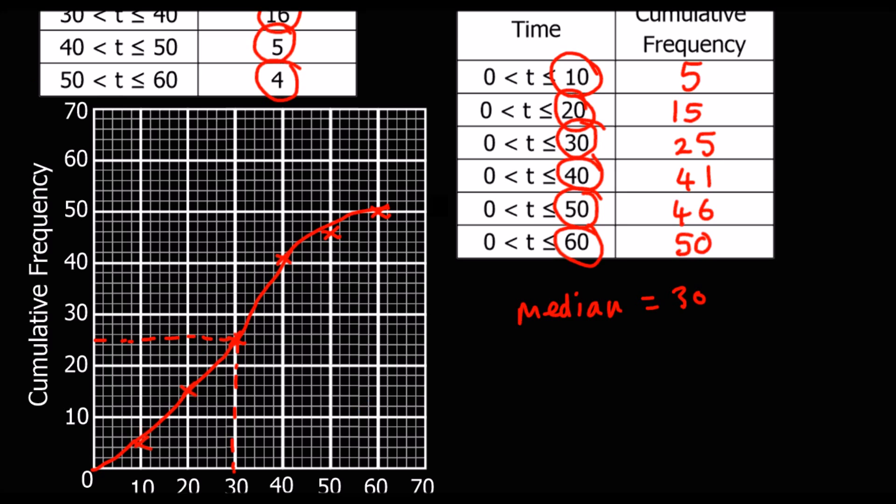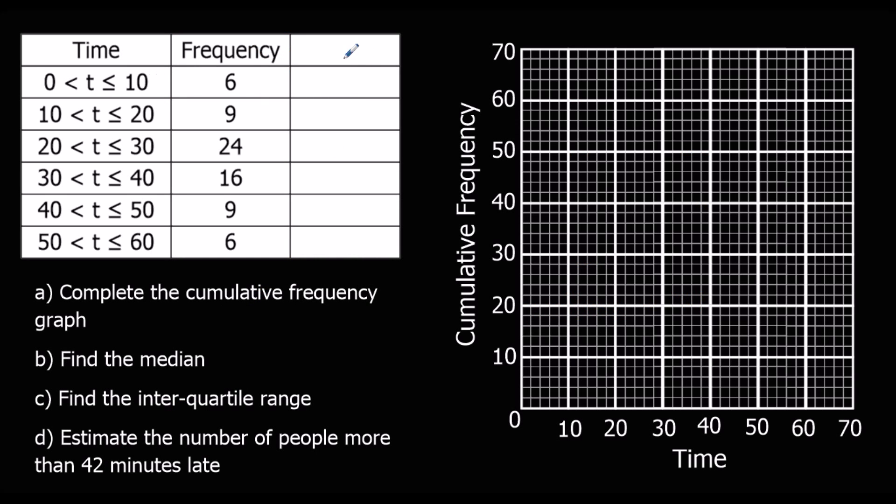Let's have a look at a different one. So here it's presented differently, but we're still going to do the same thing. Cumulative frequency is still a running total. So we'll put cumulative frequency in this box and we're going to add them up as we go along. So 6. And then we're going to add on the next one. So 6 plus 9 makes 15. Plus 24 makes 39. Plus 16, 55. Plus 9, 61. No, 64. Plus 6, 70.